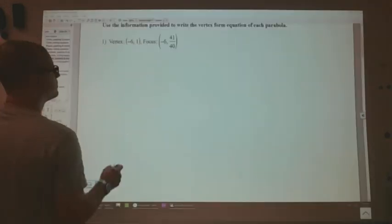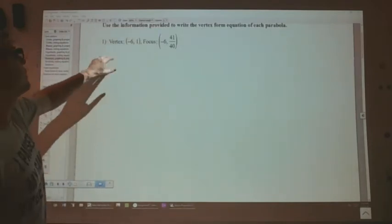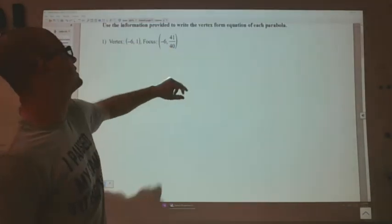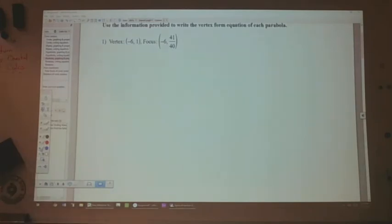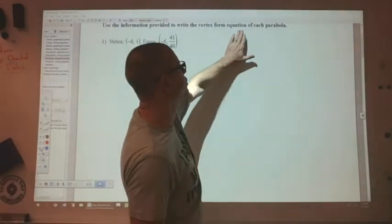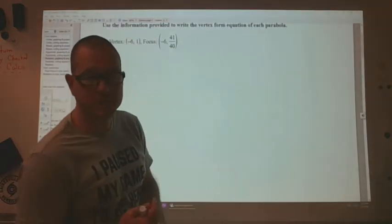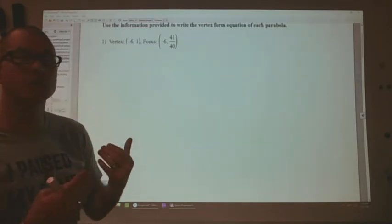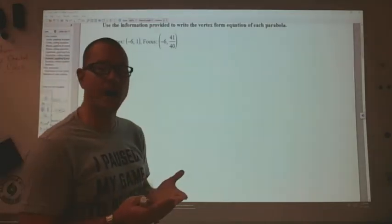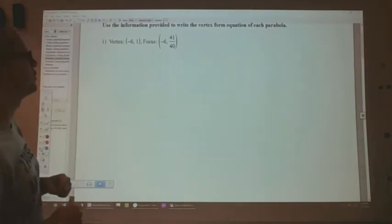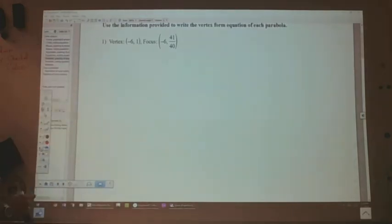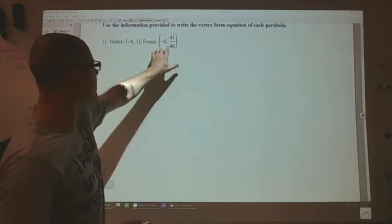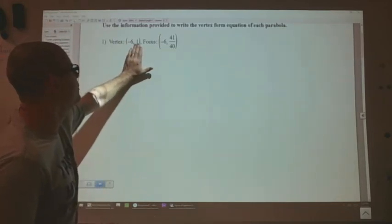Now, in this case we have a vertex at negative 6, 1 and a focal point at negative 6 and 41 over 40. So we want to get the equation of the parabola. Well first thing I have to figure out like I did with the hyperbola is the orientation. Which direction does this particular parabola go? Should my equation start with y because it's a vertical parabola or should it start with x? And to do that I'm just going to sketch out the points. Now I can also tell because the only point that is changing is the y-coordinate.